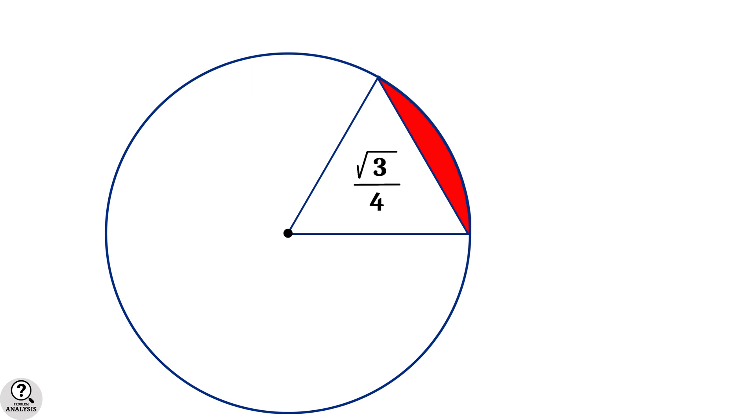After subtracting the area of the equilateral triangle, our required area will be pi by 6 minus root 3 by 4 square units. But we have two such parts. So the total area is equal to 2 times pi by 6 minus root 3 by 4 that is equal to pi by 3 minus root 3 by 2 square units.